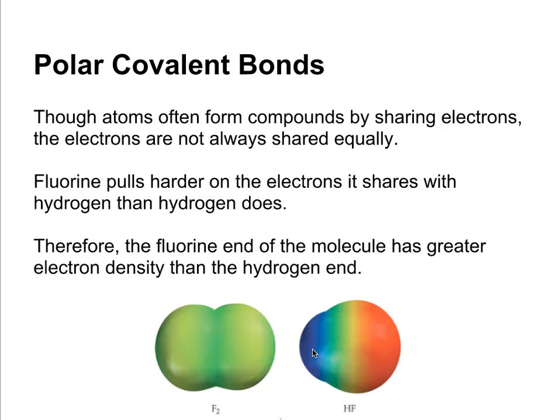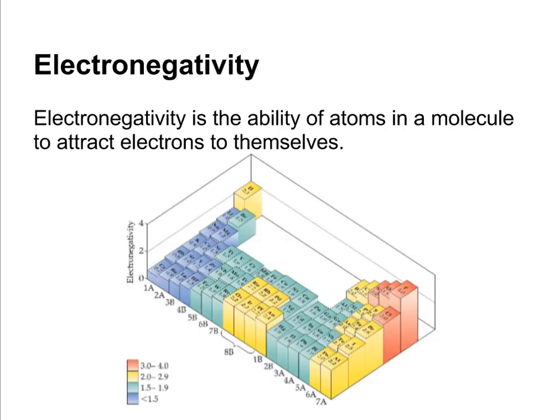This is caused by a difference in electronegativity. Electronegativity is a measure of the ability of atoms to attract electrons to themselves. And for our purposes we need to remember that fluorine is the most electronegative element and cesium is the least electronegative element.